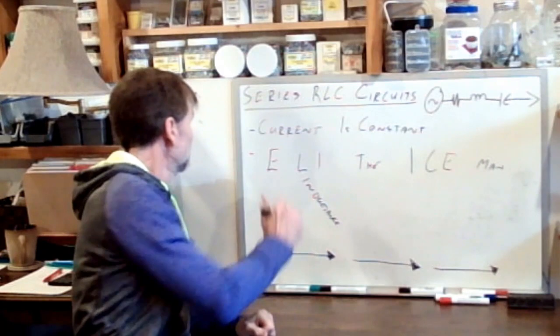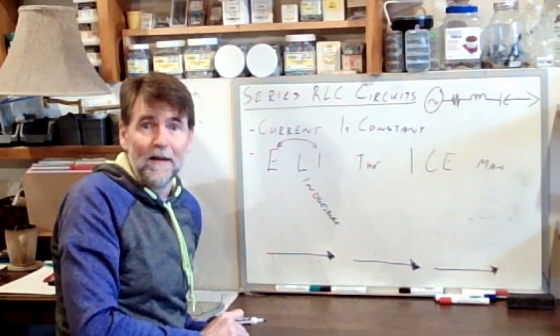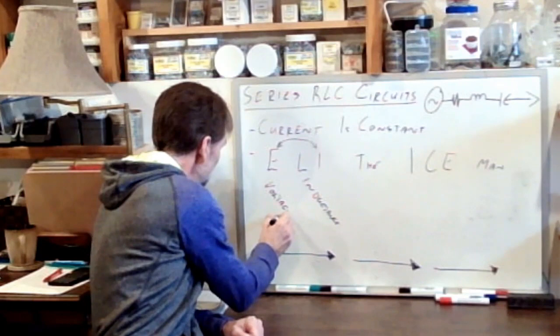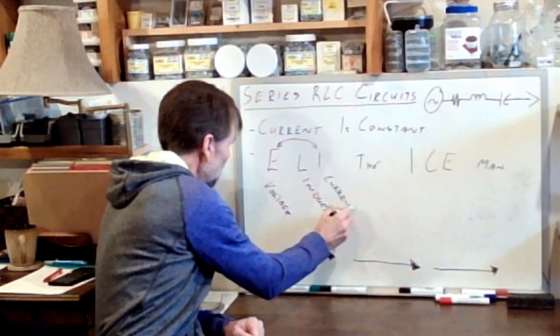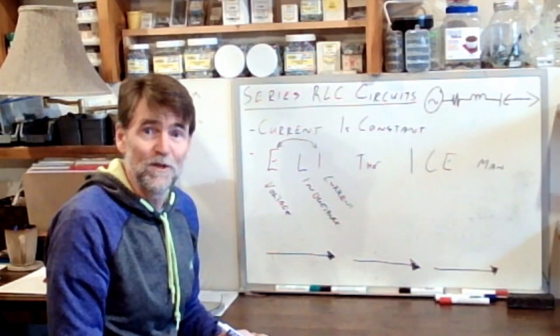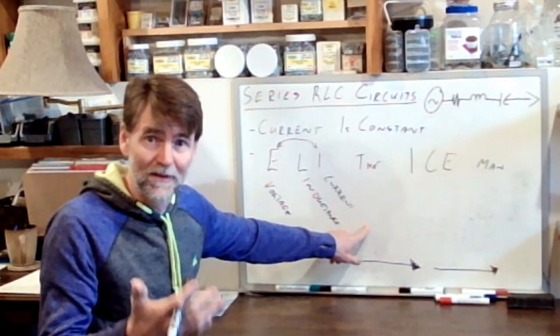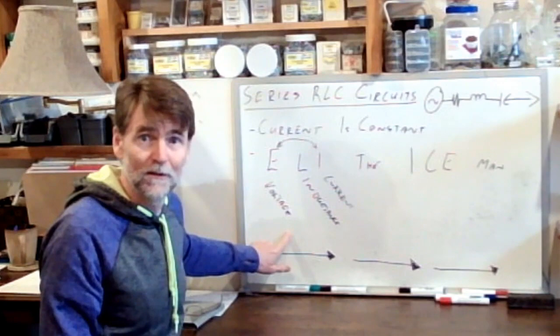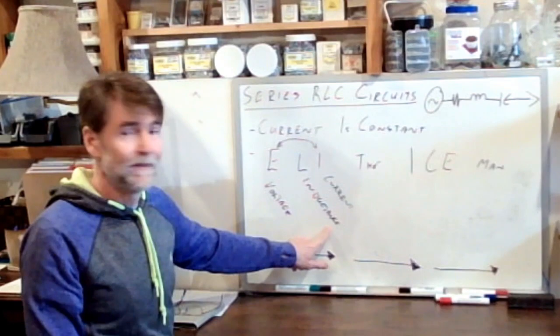What do we know to be true about an inductive circuit? The relationship between E and I. E is voltage and I is current. In an inductive circuit we see that voltage comes first and current comes next, which means the voltage leads the current. The current lags the voltage in an inductive circuit.